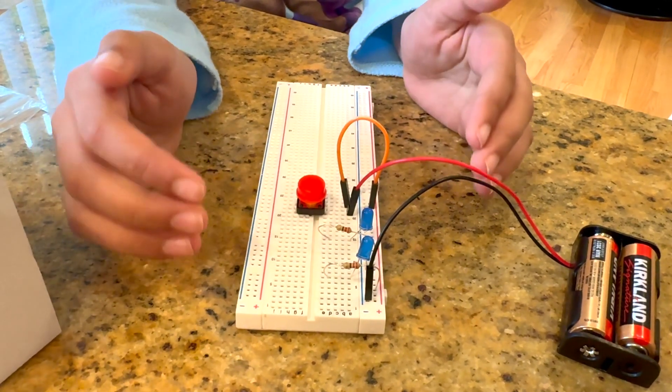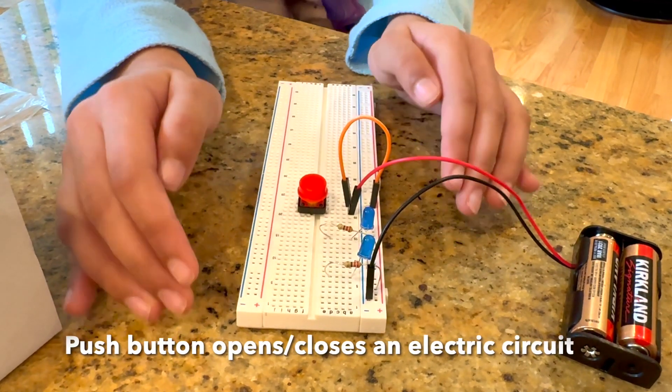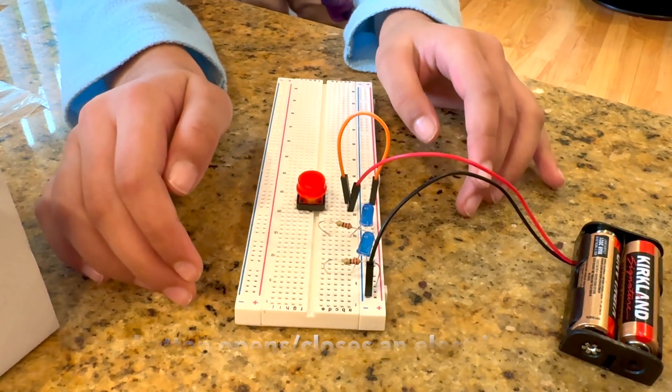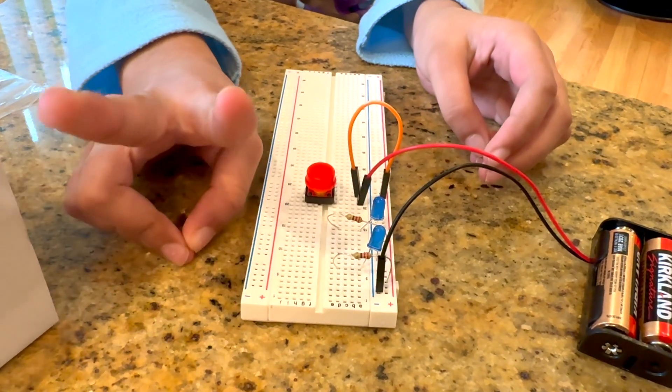The push-button acts as a switch that opens or closes an electrical circuit when pressed. It controls the flow of current in a circuit. When pressed, it physically connects two terminals.